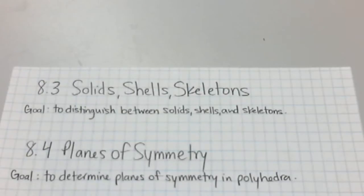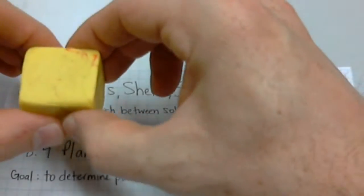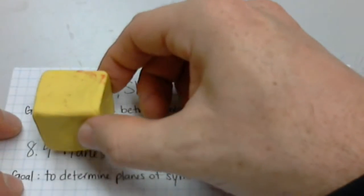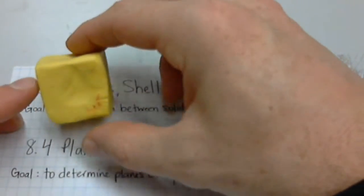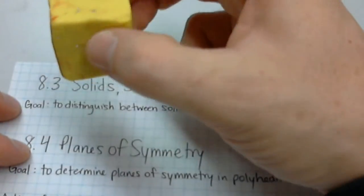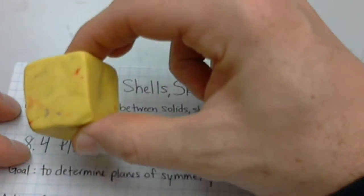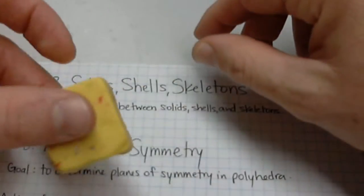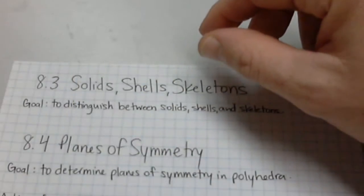So for solids, shells, and skeletons, we just need to be able to distinguish between the three. As I show you some stuff — this is a solid piece of plasticine. It is shaped into a cube-ish-like shape. It is solid all the way through. If I were to cut it in half, you would only see more plasticine. And so this is what's called a solid.